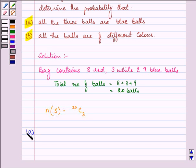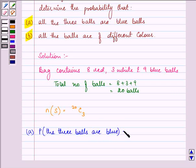Firstly, we need to find out the probability that 3 balls are blue. So it will be, there are 9 blue balls and we need to select 3 out of that